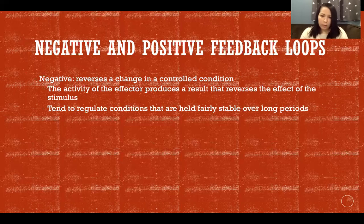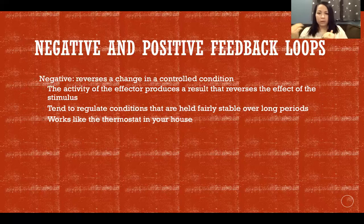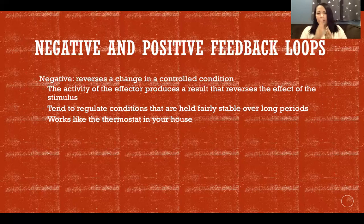The activity of the effector produces a result that reverses the effect of the stimulus, bringing the controlled condition back into range to maintain homeostasis. We use these feedback loops to regulate conditions that are held fairly stable over long periods — which is pretty much everything. Almost everything in the body is regulated via negative feedback loops. It works just like a thermostat: if you set it to 70 degrees, as temperature climbs above 70 the air conditioning kicks on to bring it back down, then kicks off as it drops back toward 70 — constantly fluctuating within a range around the target.